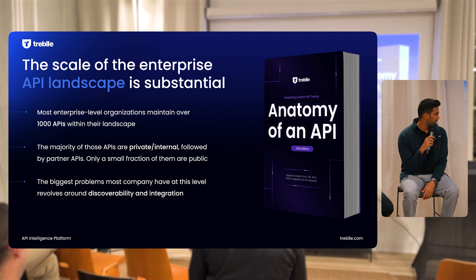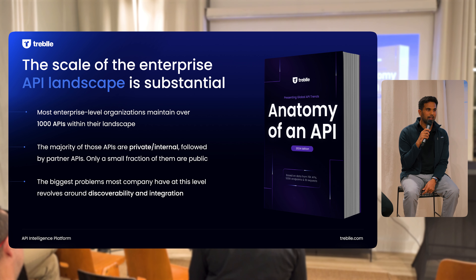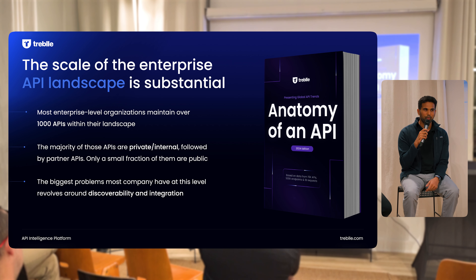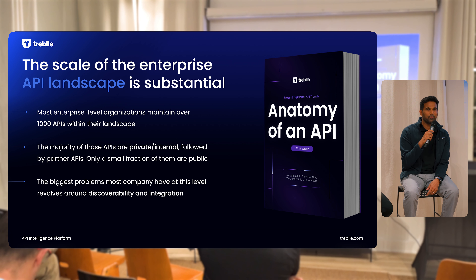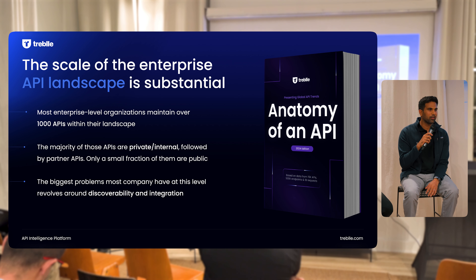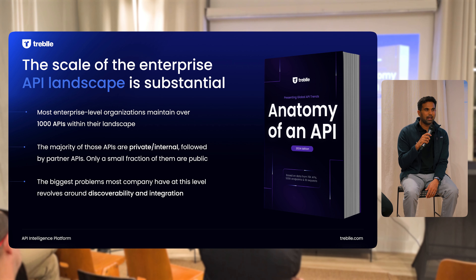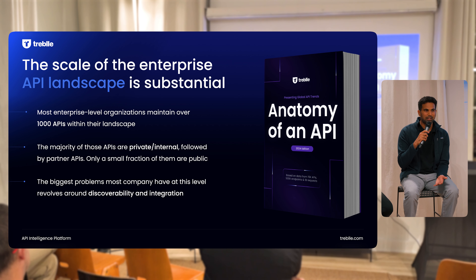The enterprise API landscape is substantial and increasing a lot — something we see growing every single day. In enterprises the number of APIs is exploding. We hear a lot of terminology around this: some people call it explosion, some people call it sprawl. What we've understood from the data we've gathered inside Treble — which is factual, not based on surveys — is that most enterprise-level organizations maintain over a thousand APIs, and that number is increasingly growing year on year. We categorize enterprise organizations as those with 5,000-plus developers.